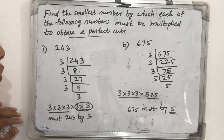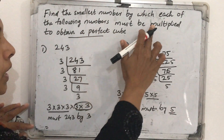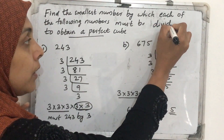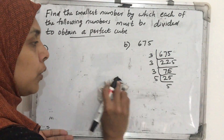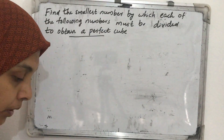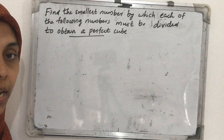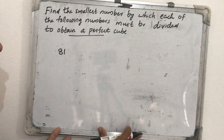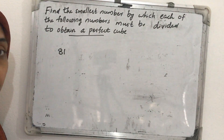Sometimes the question will ask: find the smallest number by which each of the following numbers must be divided to get a perfect cube. In that case also, what we want to do is find out the prime factorization. If any number is extra after the triplets, that number should be divided out. For example, with 81: which number should we divide 81 by to get a perfect cube?